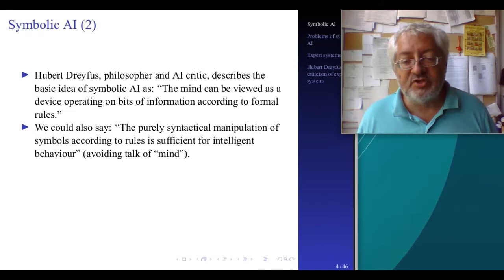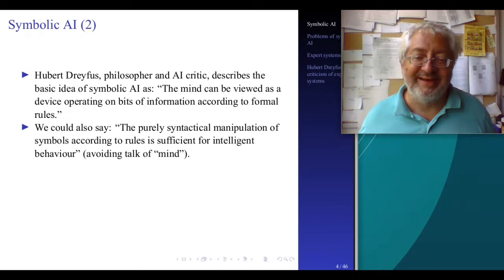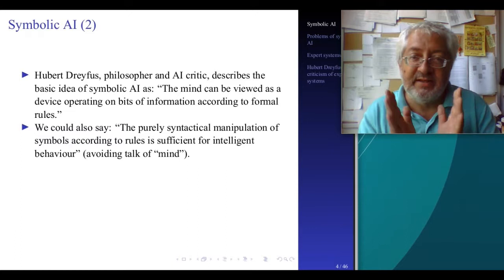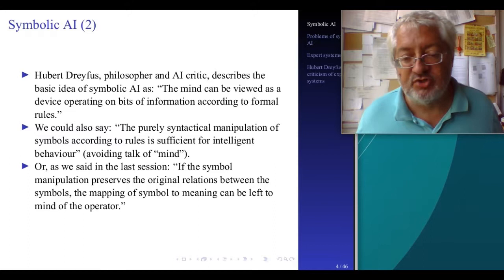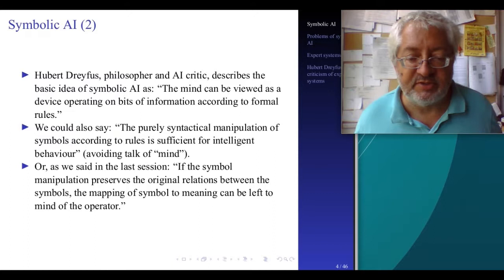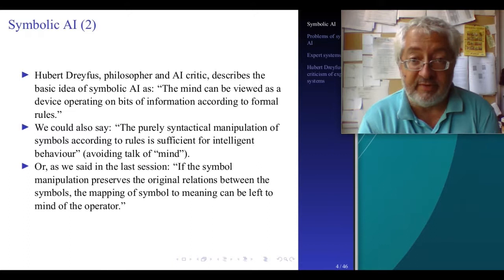The question is whether it is sufficient for all intelligent behavior. Then I would have to make a stronger claim — all intelligent behavior — and then I would have something that can be criticized by Dreyfus. Or as we said in the last session, if the symbol manipulation preserves the original relations between the symbols, the mapping of symbol to meaning can be left to the mind of the operator. This is a point from Hoagland.